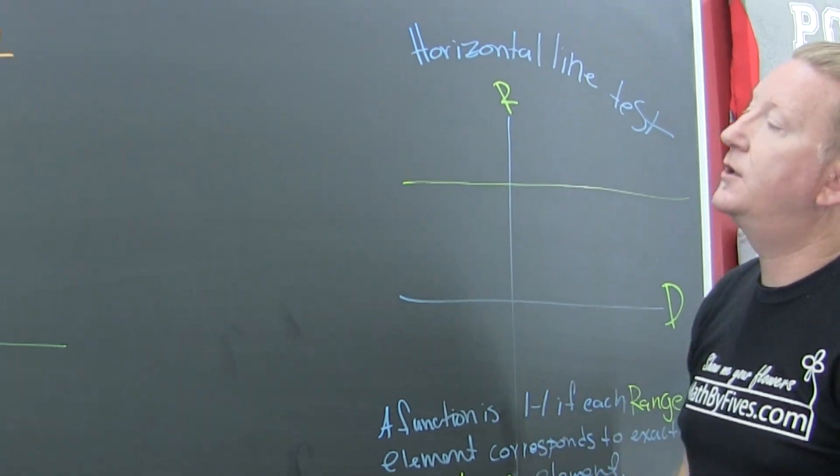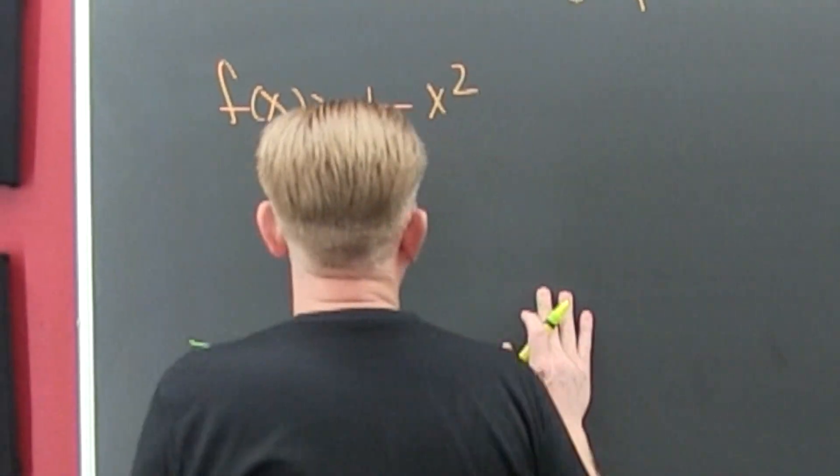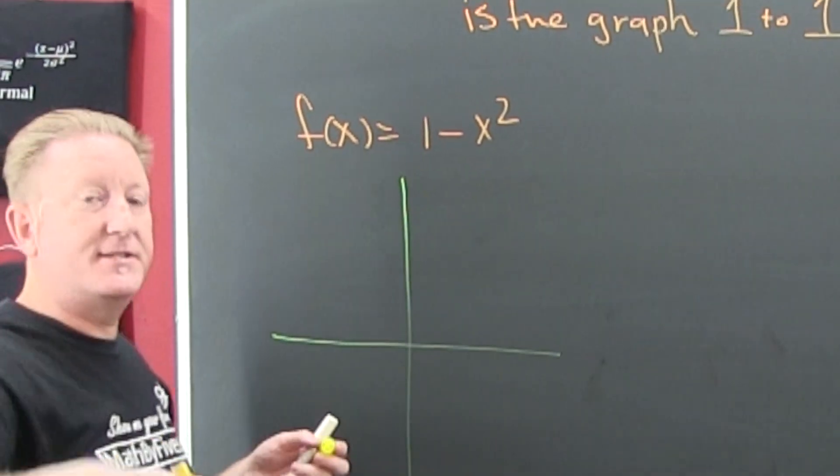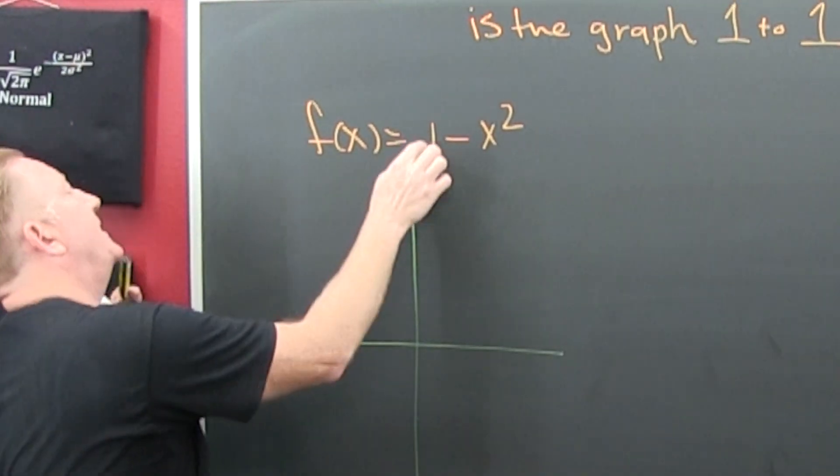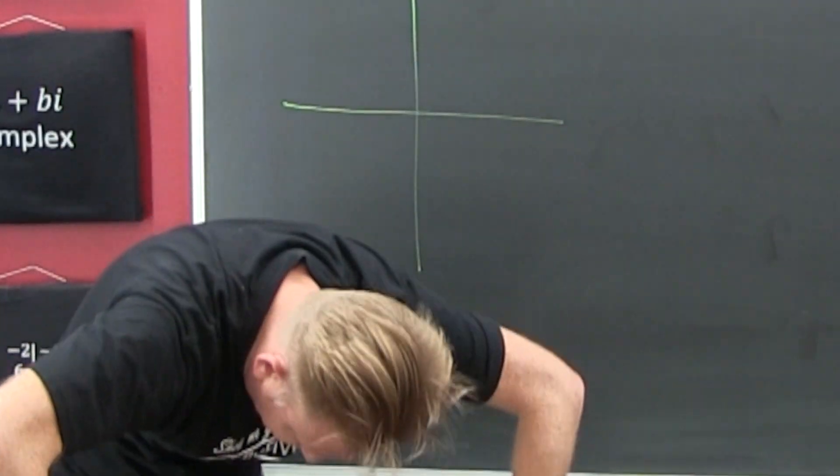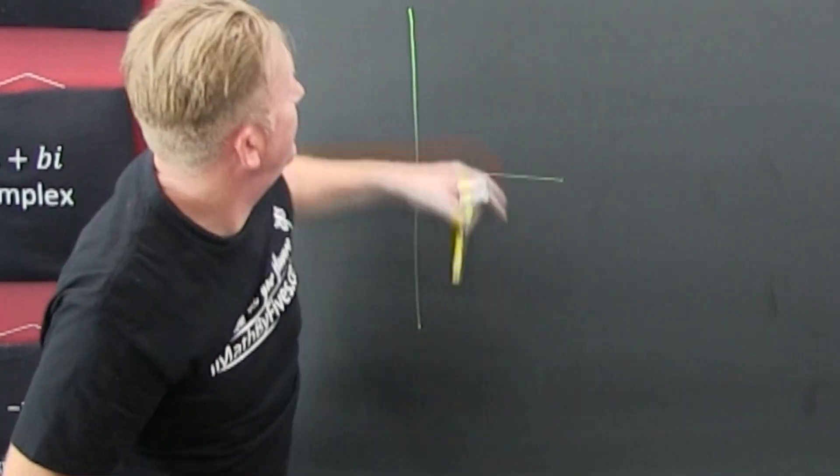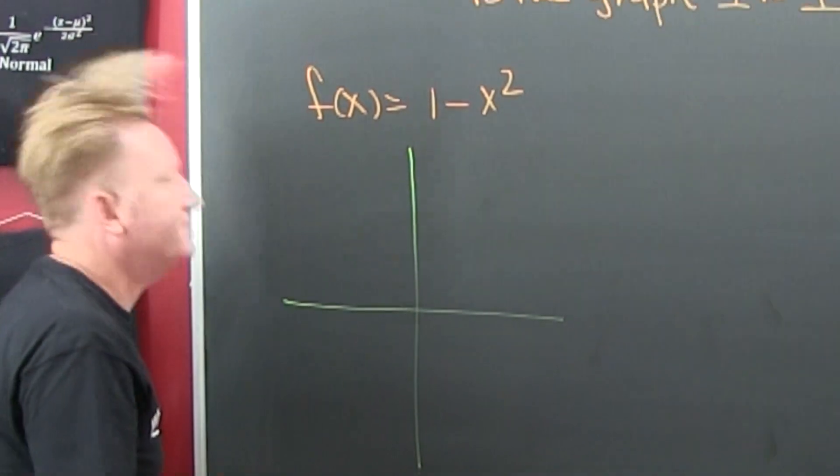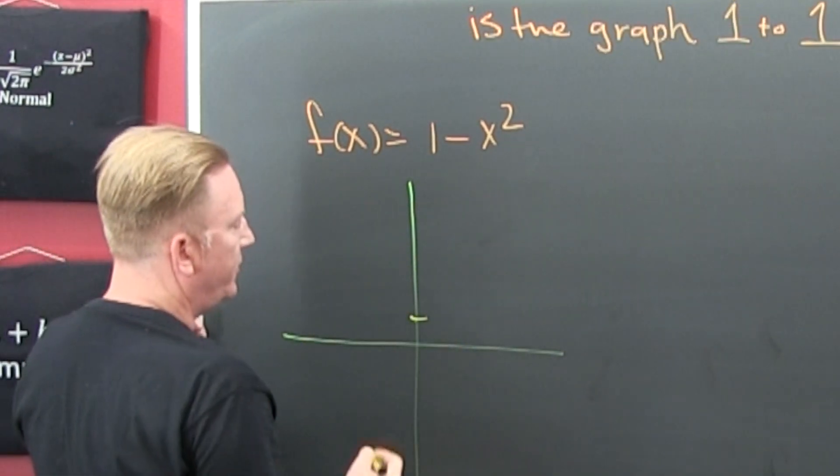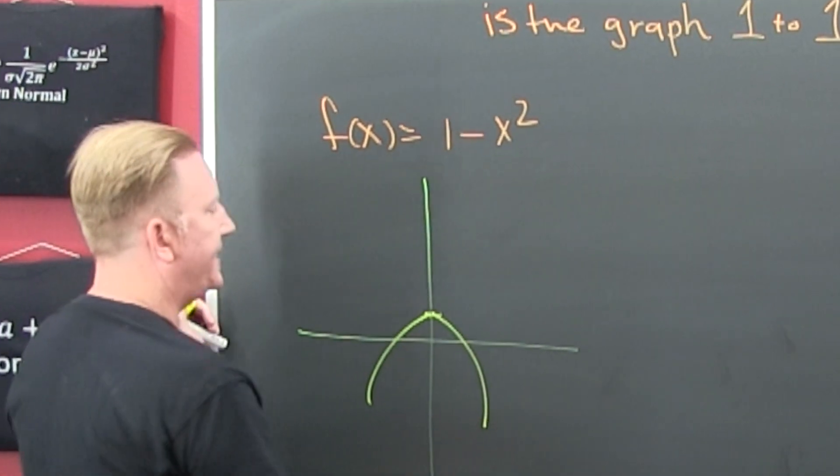So let's go ahead and graph this one. What is this? Yes, it's a downward facing parabola, moved up one unit. So here's one unit and then it does a little something like this.